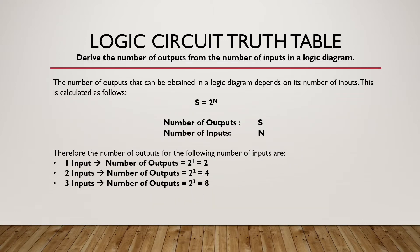For the Logic Circuit Truth Table, firstly we need to know how to derive the number of outputs from the number of inputs in a logic diagram. To do so, we make use of a simple equation: s = 2^n, whereby s is the number of outputs and n is the number of inputs. So if we have one input, we get two outputs; two inputs gives four outputs; three inputs gives eight outputs.